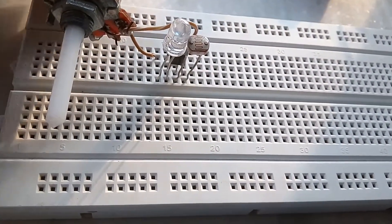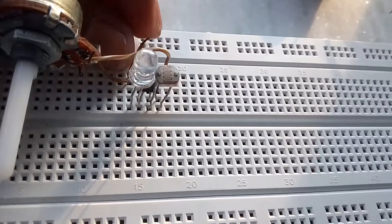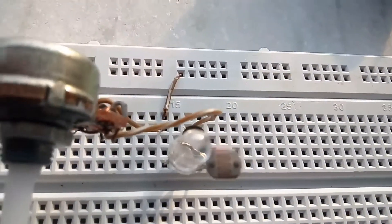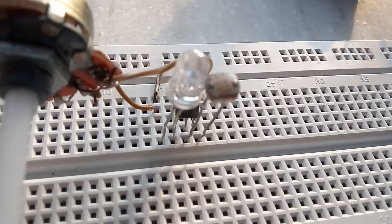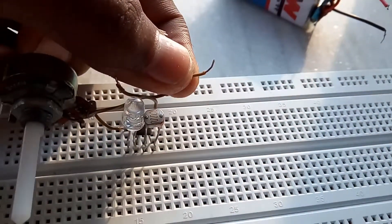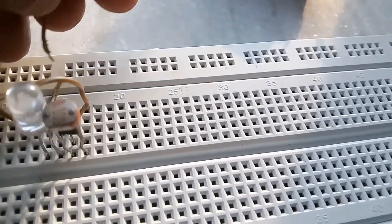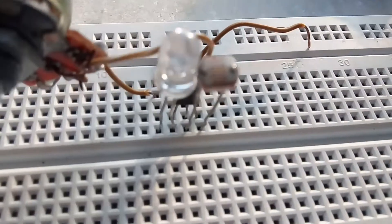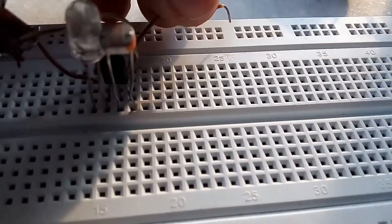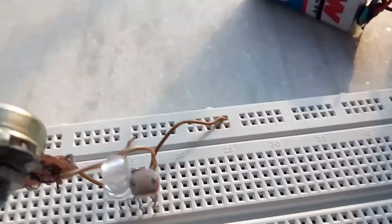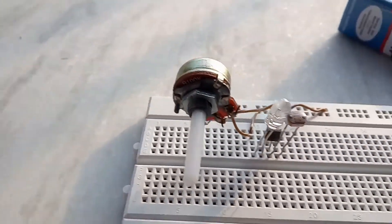Connect the anode of the LED to the positive rail. Then take another wire and connect the emitter of the BC 547 NPN transistor to the negative rail. Till now the project should look like this.